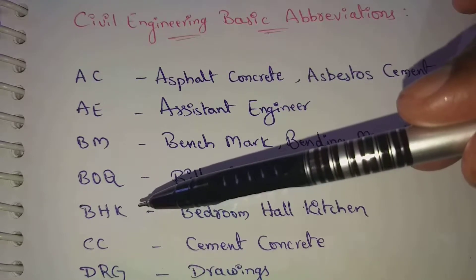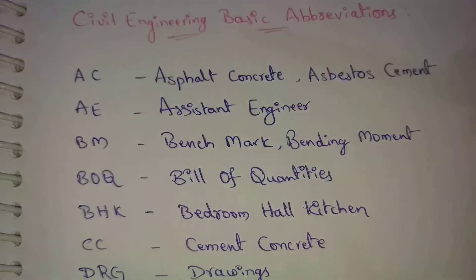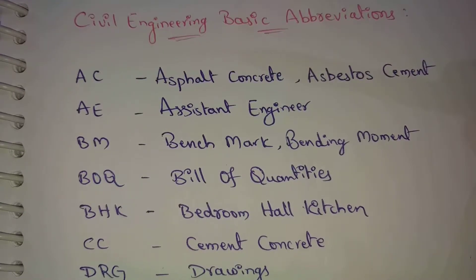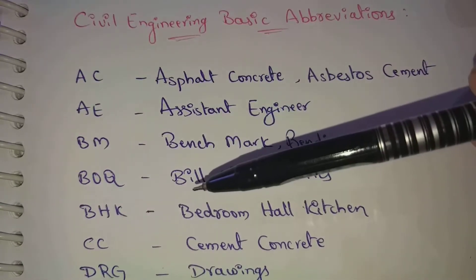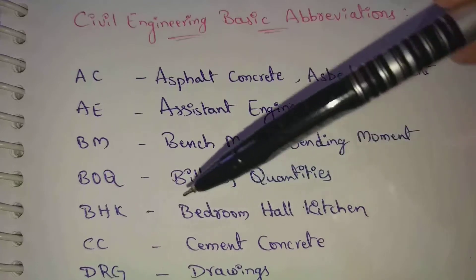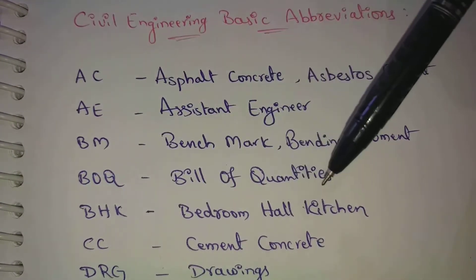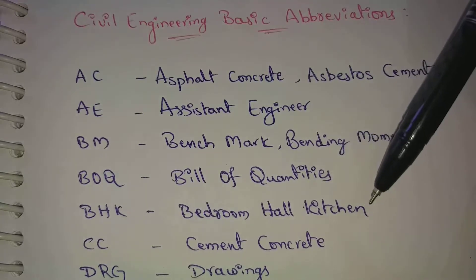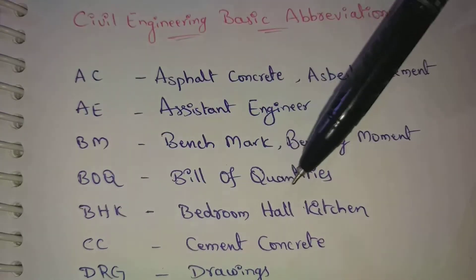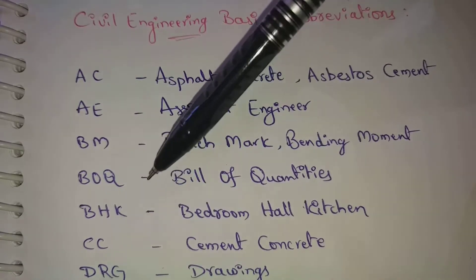Next, BHK — this is one of the best interview questions. They ask: what is 2 BHK? 2 BHK means 2 bedrooms, 1 hall, 1 kitchen. For example, 3 BHK means 3 bedrooms, 1 hall, 1 kitchen. BHK stands for bedroom, hall, kitchen — this is one of the major interview questions.